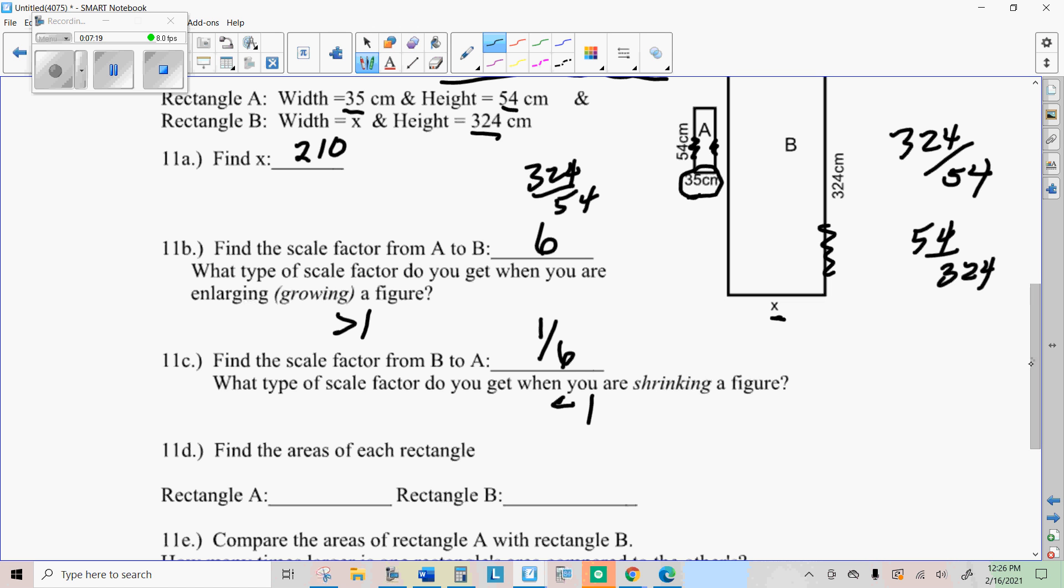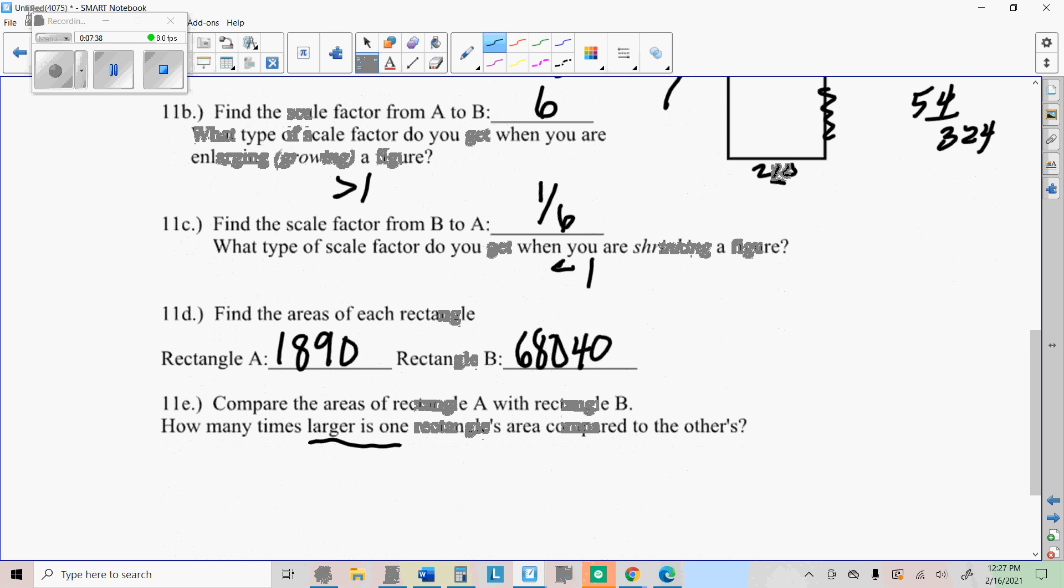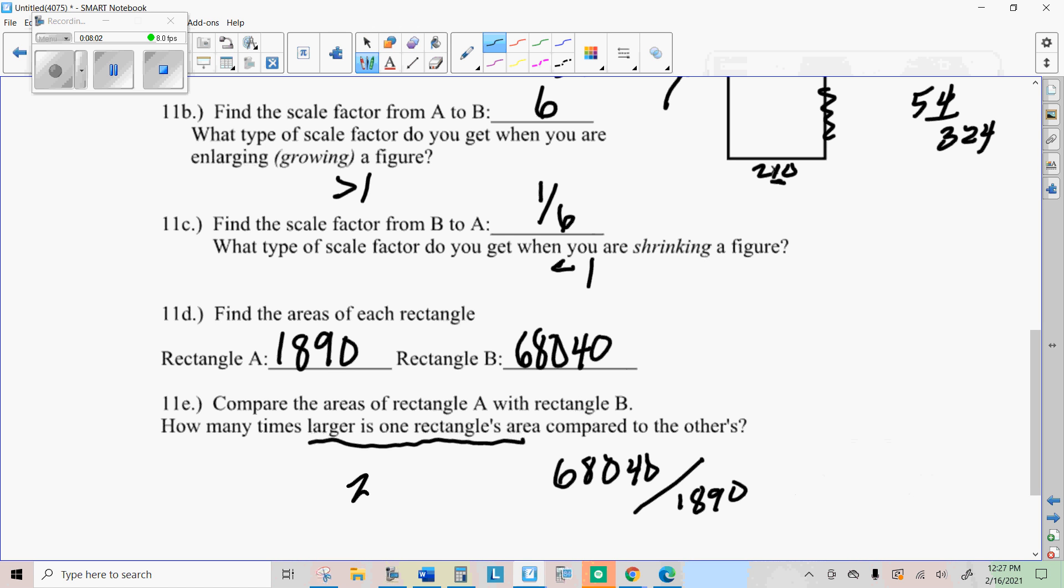Now we're going to find the areas. So go ahead and do that. The area of rectangle A, you're going to do 54 times 35. And for rectangle B, you're going to do 210 times 324. Go ahead and find those areas. Now to find out how many times larger one rectangle's area is compared to the other, to figure out a multiplication problem, how many times you divide. So we're going to take the bigger one, divided by the smaller one. So 68,040 divided by 1890. And we find that it's 36 times greater.